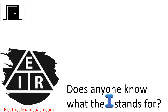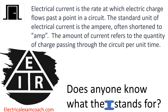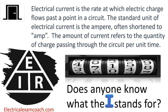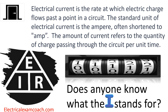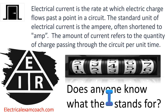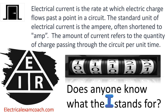The I stands for electrical current. It's the rate at which the electric charge flows past a point in the circuit. The standard unit of electrical current is the ampere, often shortened to amp. The amount of electrical current refers to the quantity of charge passing through the circuit per unit of time. Just remember in this relationship that the I stands for current.